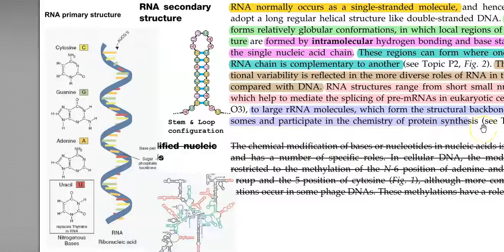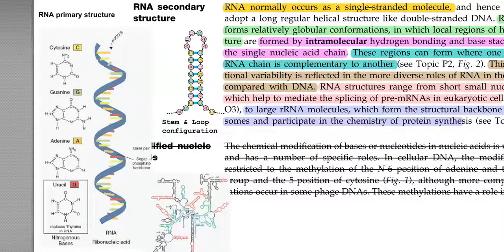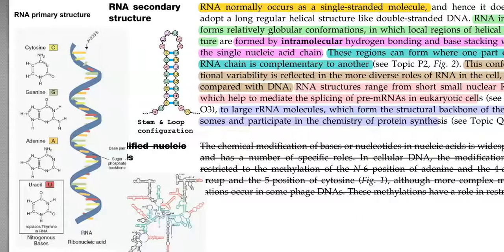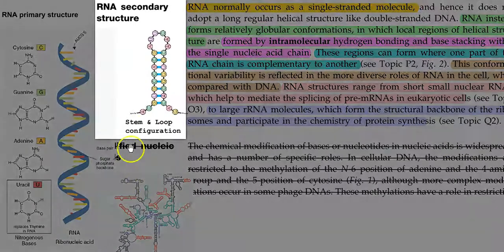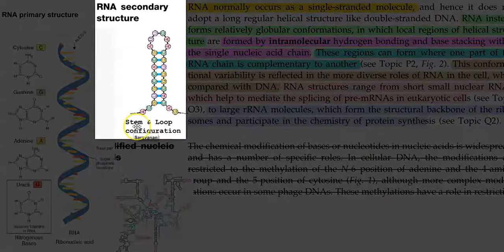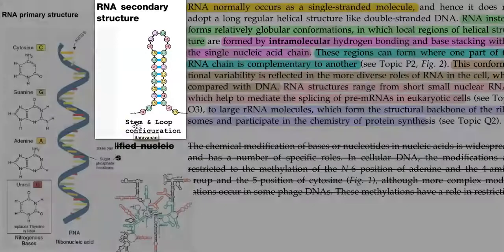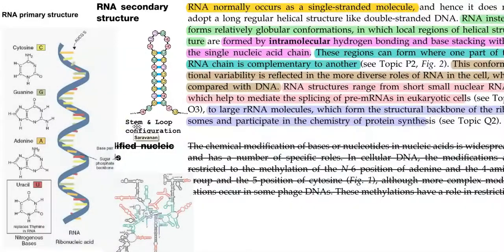However, this structure of RNA — that is the primary structure of RNA — can be changed into a variety of forms, especially this stem and loop configuration. This is a form which commonly results in RNA as a secondary structure formation.